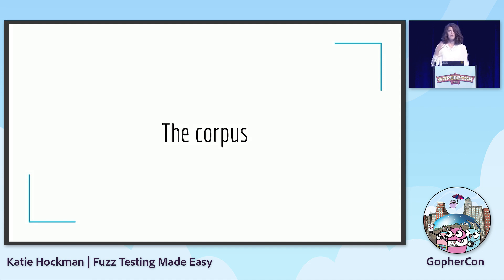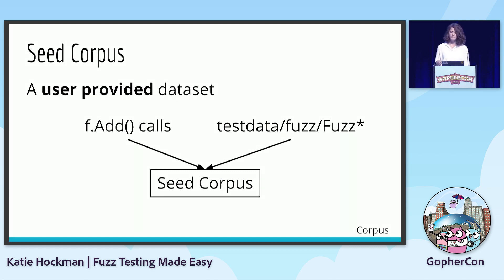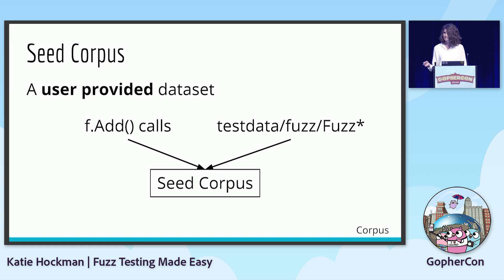A term you're going to hear often in the context of fuzzing is the corpus. The corpus is a collection of inputs that guide fuzzing. For the Go fuzzer, a corpus is made up of two components: the seed corpus and the generated corpus. The seed corpus is a user-provided dataset which can be used to guide the fuzzing engine. It's sourced from two places: f.add calls within the fuzz test, and the files in the testdata/fuzz directory within the package named after your fuzz test. The seed corpus also serves an additional purpose in Go — running with go test even when fuzzing isn't running, so it can act as a unit test or a regression test.